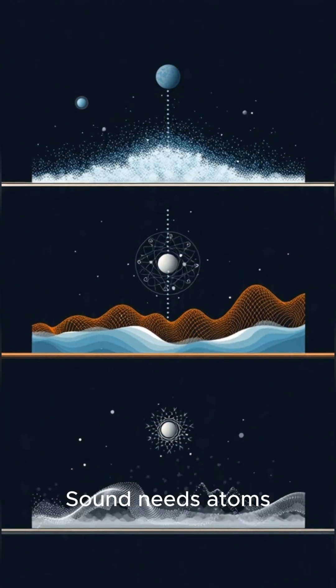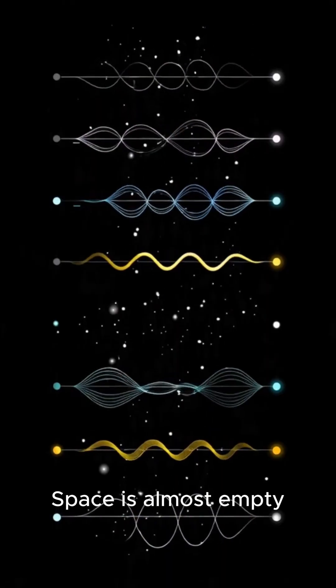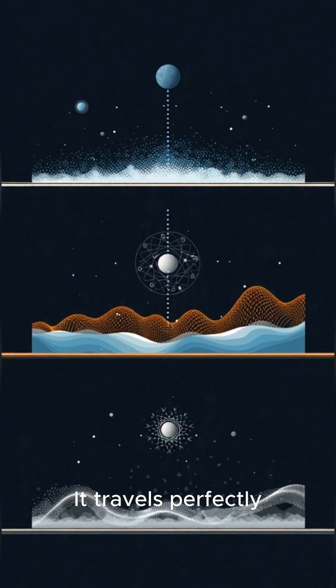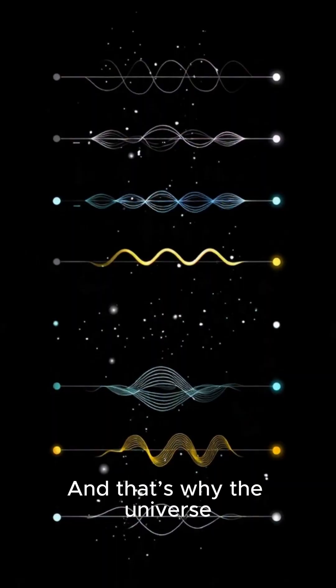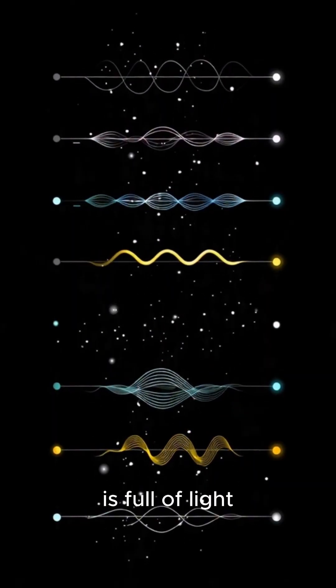To summarize, sound needs atoms. Space is almost empty. Light is electromagnetic. It travels perfectly through a vacuum. And that's why the universe is full of light, but silent.